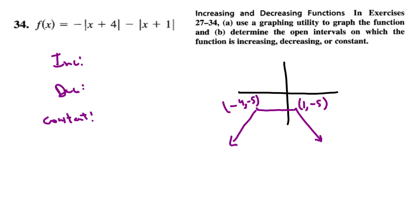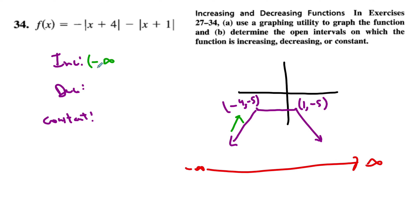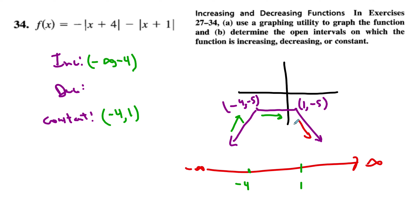Starting at negative infinity and heading to positive infinity: first, the graph is increasing from negative infinity up to, but not including, negative 4 — remembering it's all about the x. Then the graph goes flat, aka constant, from negative 4 up to but not including 1. Then it decreases, going down starting at 1 off to the rest of the graph.